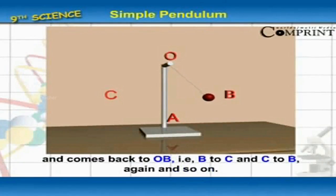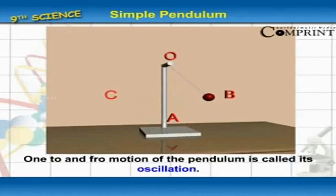That is, B to C and C to B, again and so on. One to-and-fro motion of the pendulum is called its oscillation.